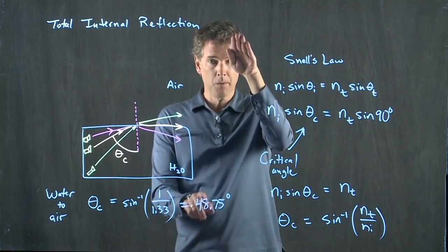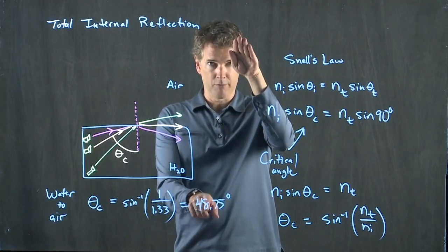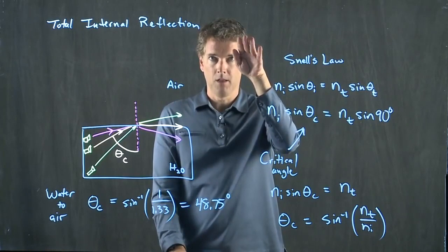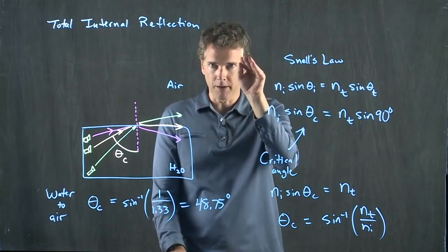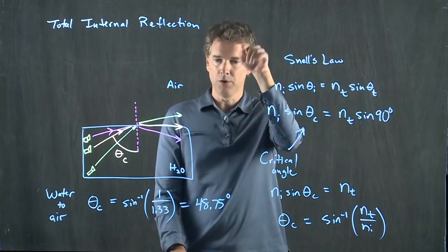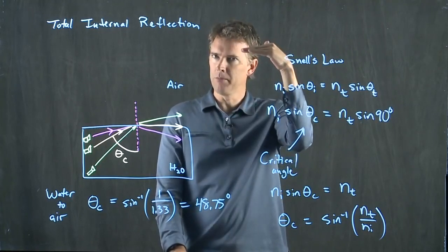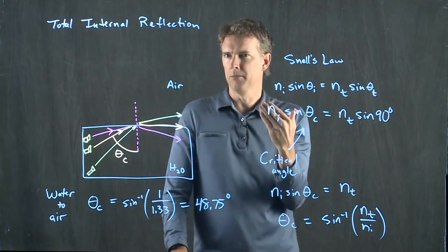And then when you get to this magic angle, 49 degrees, you can't see the sky anymore. The water surface becomes a perfect reflector. And all you see then is the other side of the pool. It becomes a perfect mirror. And it's sort of interesting when you do that.